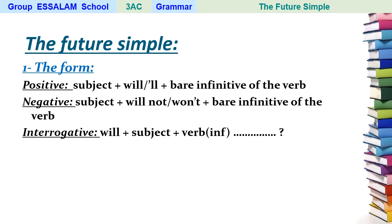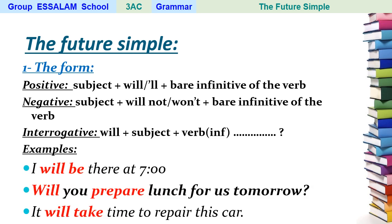Let's see some examples. First example: 'I will be there at seven o'clock.' Look at this sentence carefully — we have the subject pronoun 'I', plus 'will' for the future, plus the verb in the infinitive 'to be', plus the rest of the sentence.